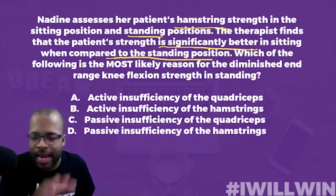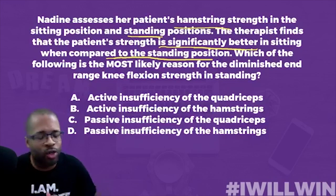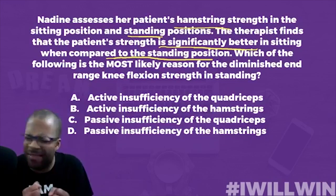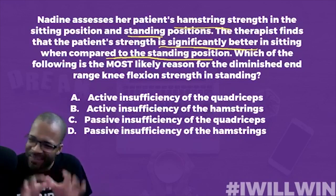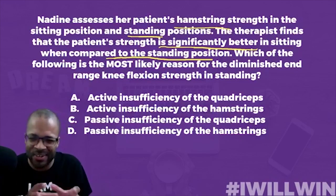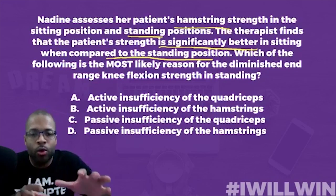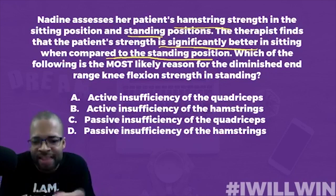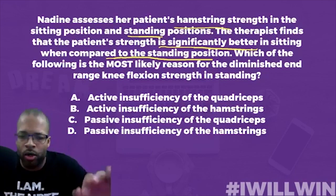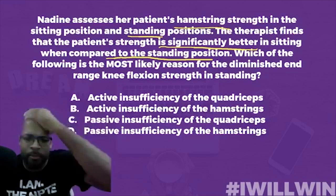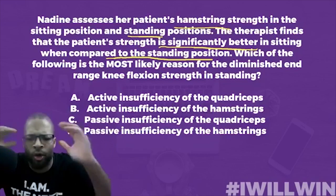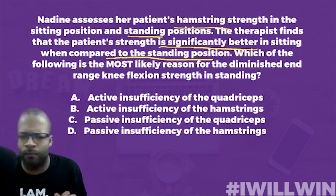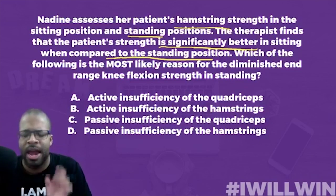The final answer is B — active insufficiency of the hamstrings. If you got this correct, congratulations. Active and passive insufficiency claim a lot of victims; this is a tough topic. For those who didn't get it right, it's not that you're stupid. I need you to answer: have you not put in the effort to learn this? If you have put in the effort, it's that the system wasn't built to teach you this in a way you understand.